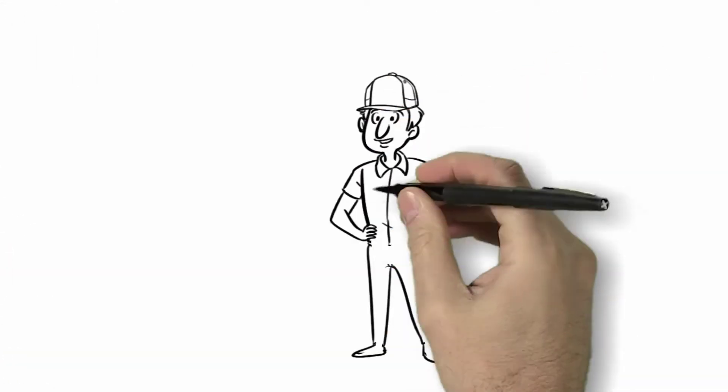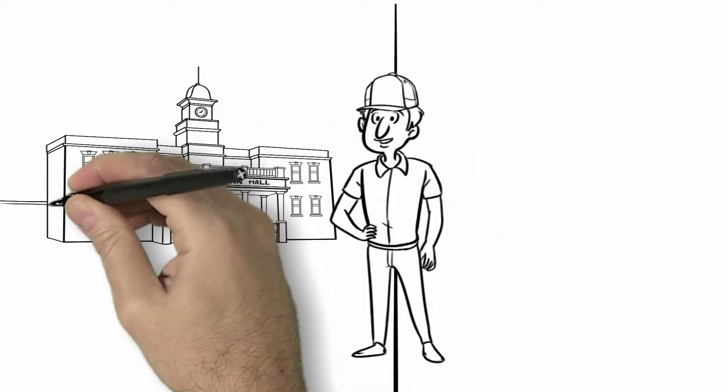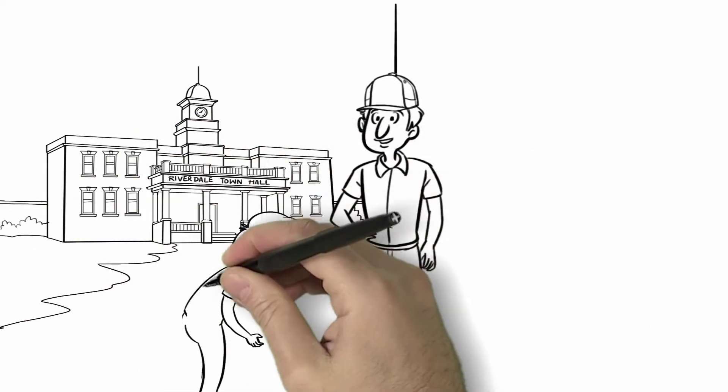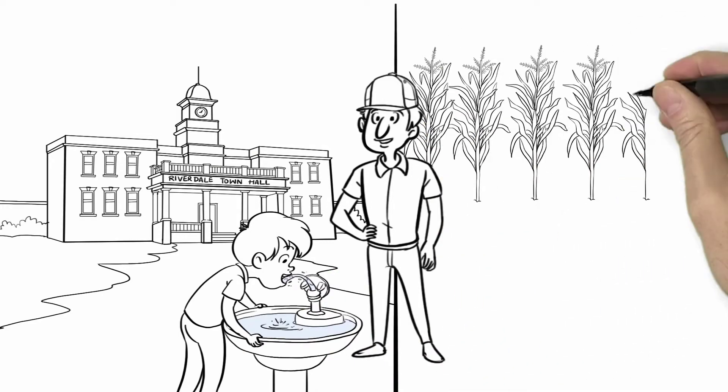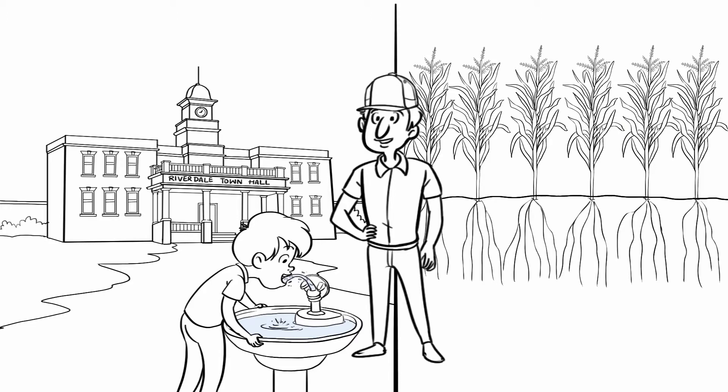Joe understands Ed's concerns, and the idea of storing or retaining water really has him interested. It could help the town of Riverdale solve their water quality issues and increase crop yield for him during hot, dry summers.